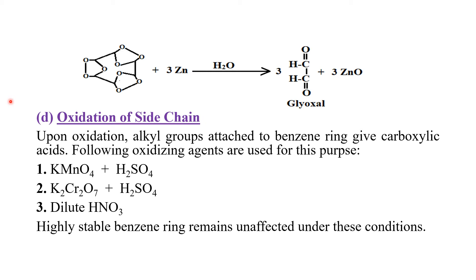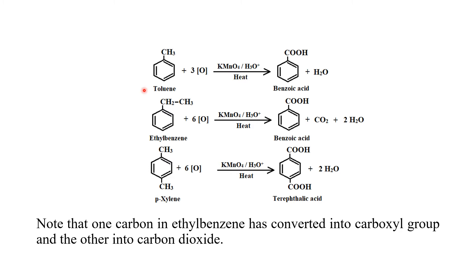Side chain oxidation में हम alkyl groups की example लेंगे। जब alkyl benzene की oxidation होती है तो नतीजे के तौर पे carboxylic acids बन जाती हैं। Oxidation के लिए reagents: potassium permanganate and sulfuric acid (acidified KMnO4), potassium dichromate and sulfuric acid (acidified K2Cr2O7), और dilute nitric acid। In these conditions benzene ring highly stable होती है इसलिए इस पर कोई असर नहीं होता। पहली case है toluene - atomic oxygen इस carbon atom को oxidize करके carboxyl group में change कर देगी - therefore the products are benzoic acid and water।